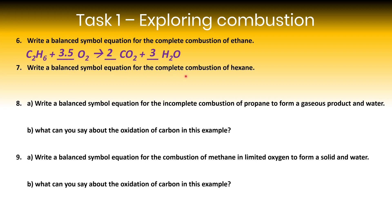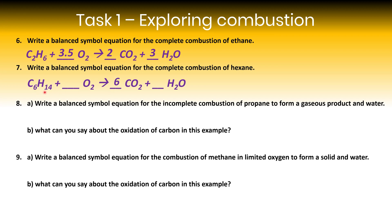A balanced equation for the complete combustion of hexane: hex means six carbons, so following CₙH₂ₙ₊₂ the formula is C₆H₁₄. Six carbons gives six CO₂; fourteen hydrogens gives seven H₂O. Six×2 gives twelve oxygens, seven×1 gives seven — nineteen total oxygens on the right, so 9.5 O₂ on the left.